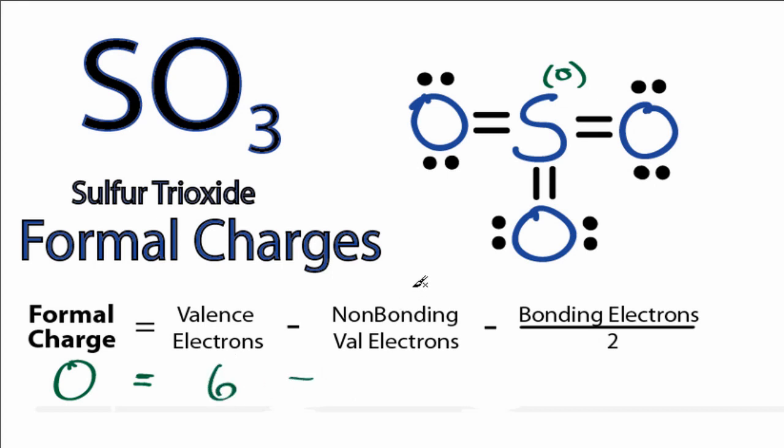Subtract from that the non-bonding electrons. We have four non-bonding valence electrons on each oxygen, and then we'll subtract the bonding valence electrons, and we have four bonding valence electrons. Divide that by two. Six minus four minus two gives us zero, so the formal charges on the oxygen, each one of those, is going to be zero.